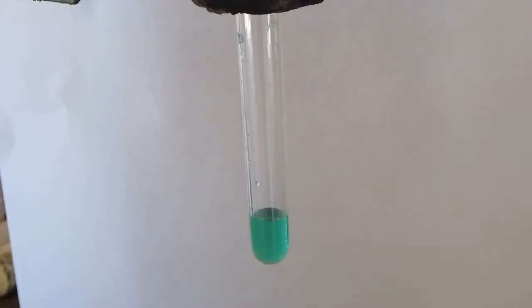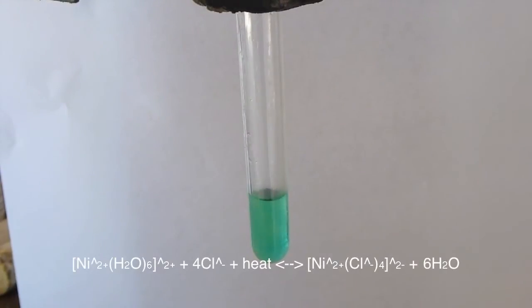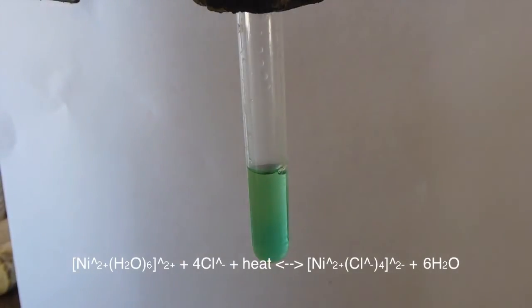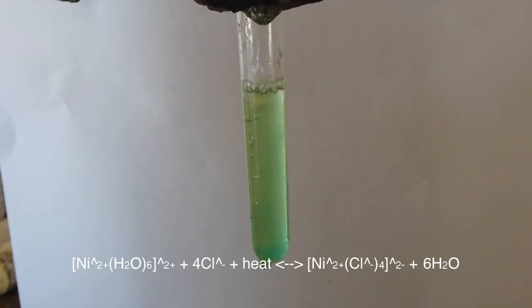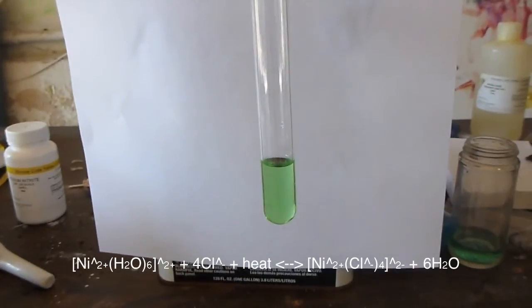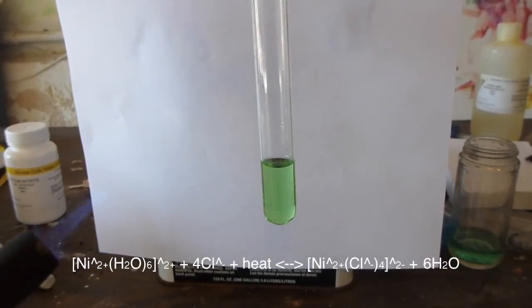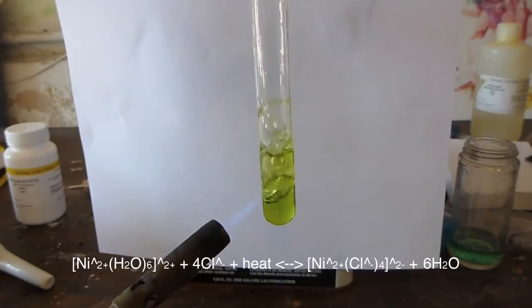Here we have some hexa-aqua complex, and right now I'm adding chloride ions in the form of hydrochloric acid to it. Now at first you don't see much of a color change, and this is because although chloride ions are stronger nucleophiles than water and will eventually displace the water in the complex, they're only stronger at higher temperature, as you can see from the chemical equation below. So as I heat up the test tube, the equilibrium is shifted to the right because heat is on the left side of the equation. So you start to see a stronger yellow color, which is from the tetrachloral complex.